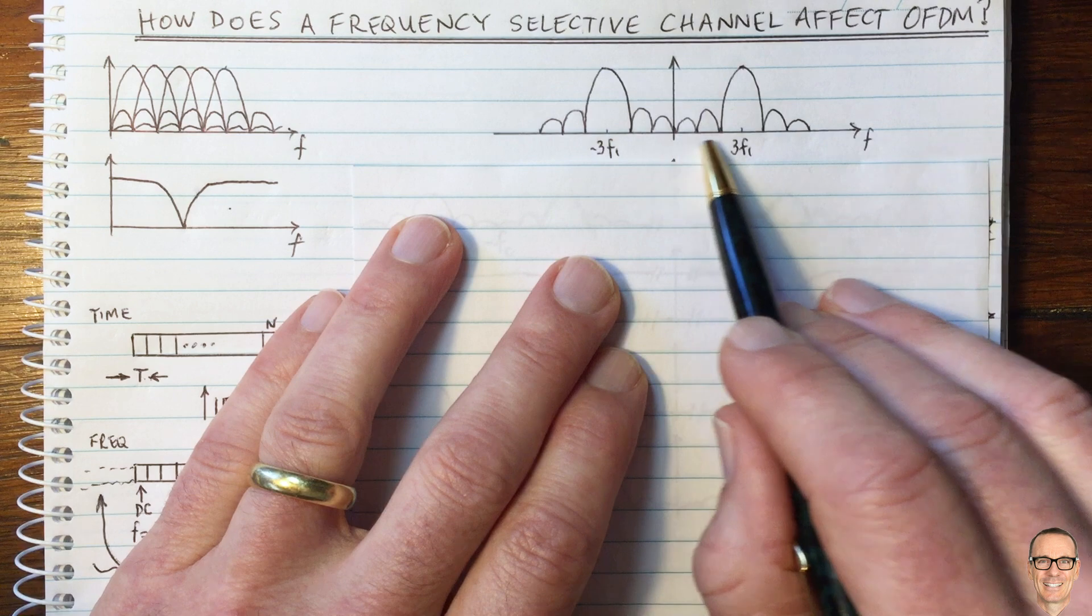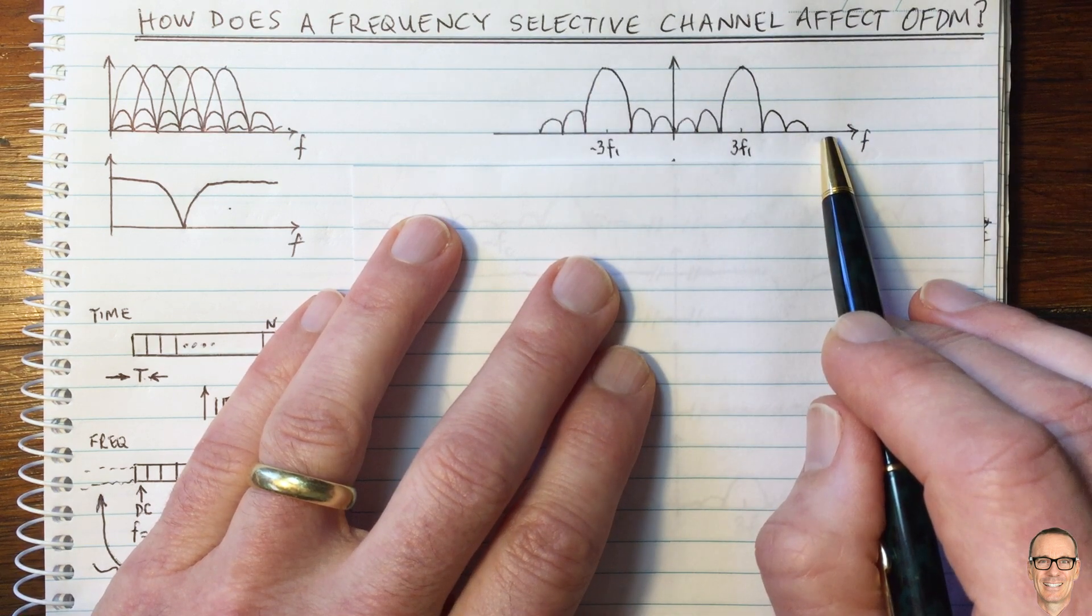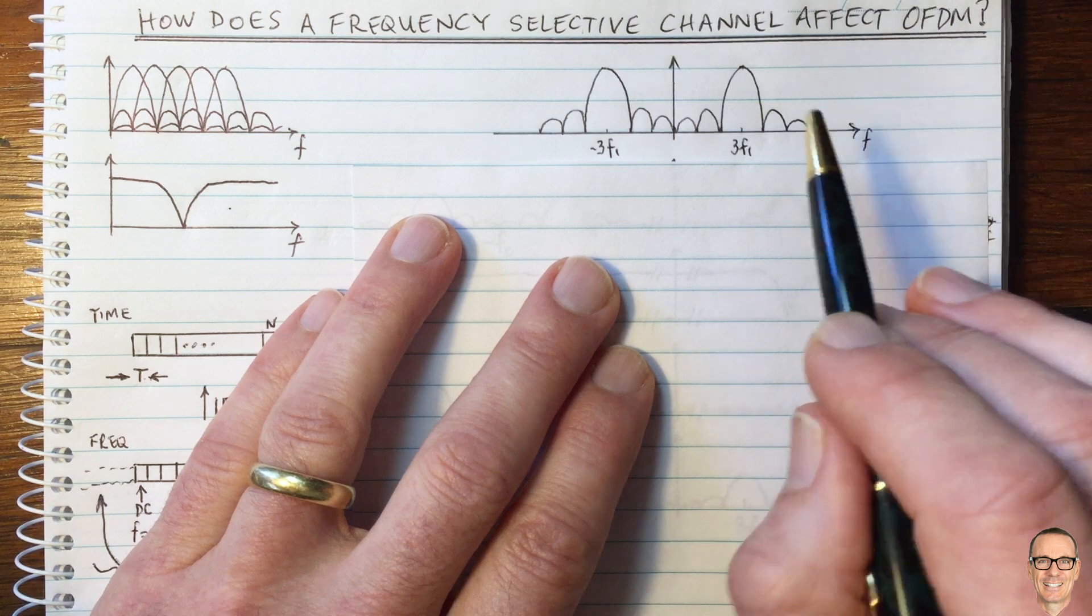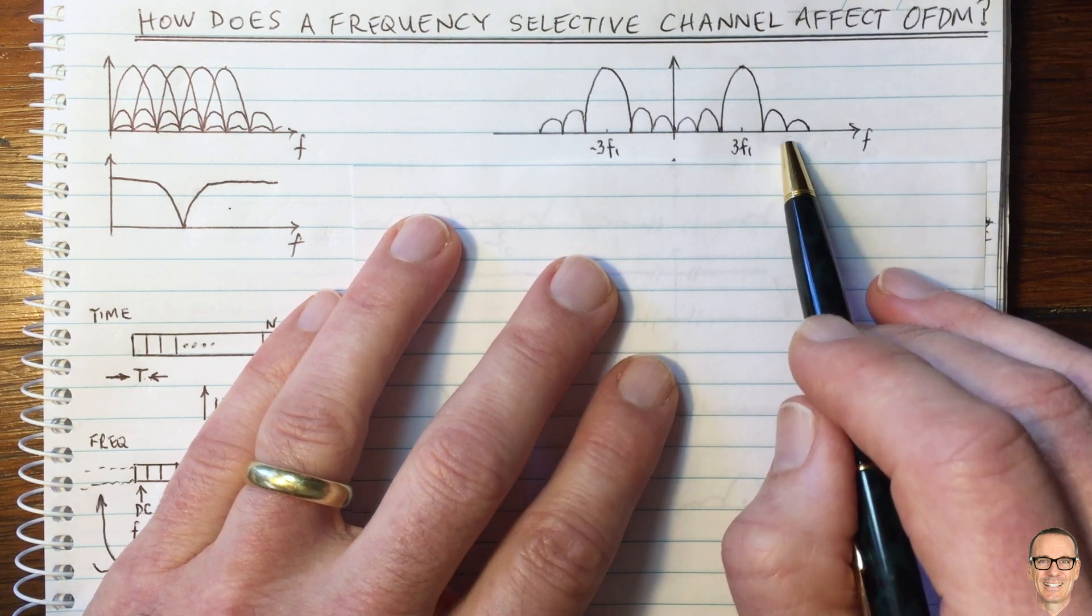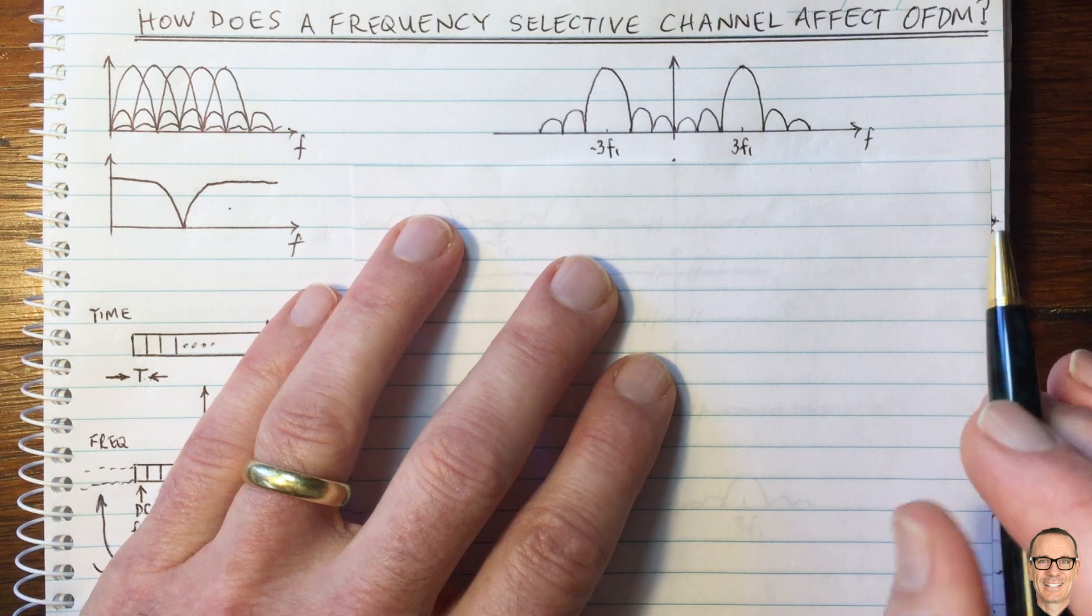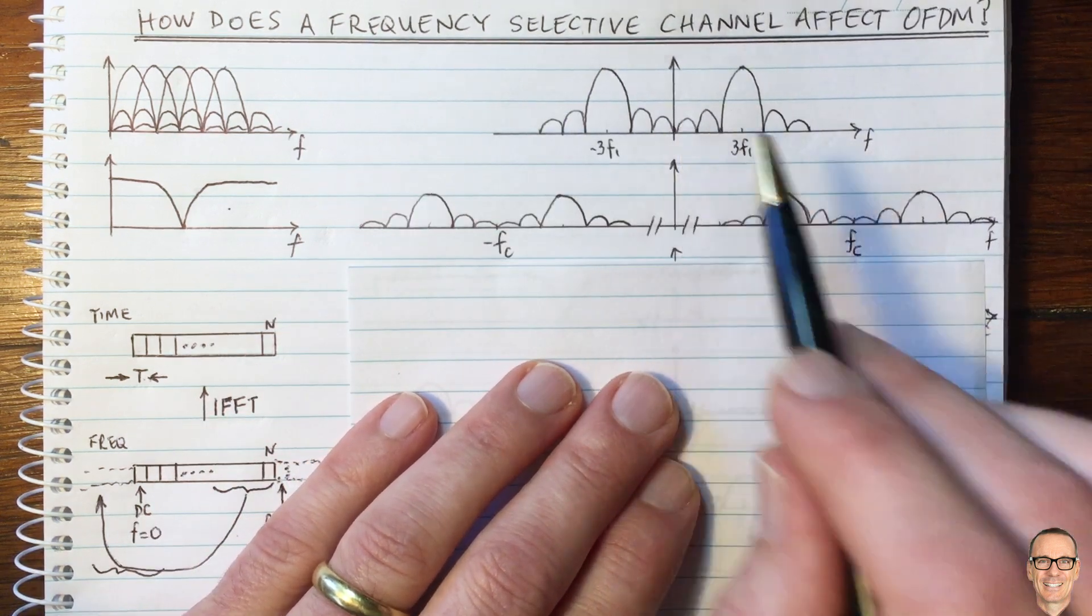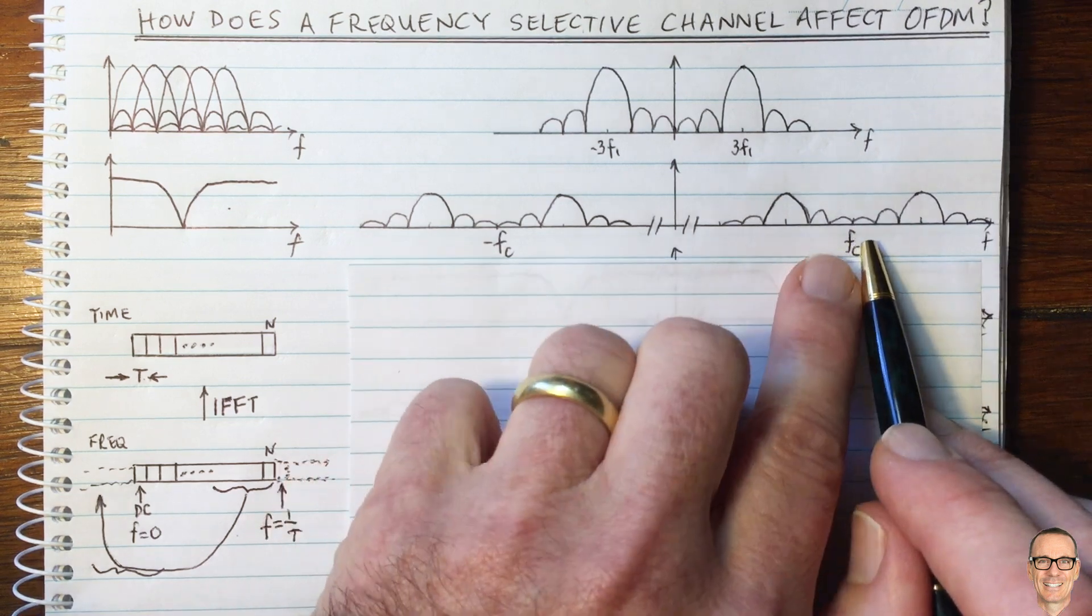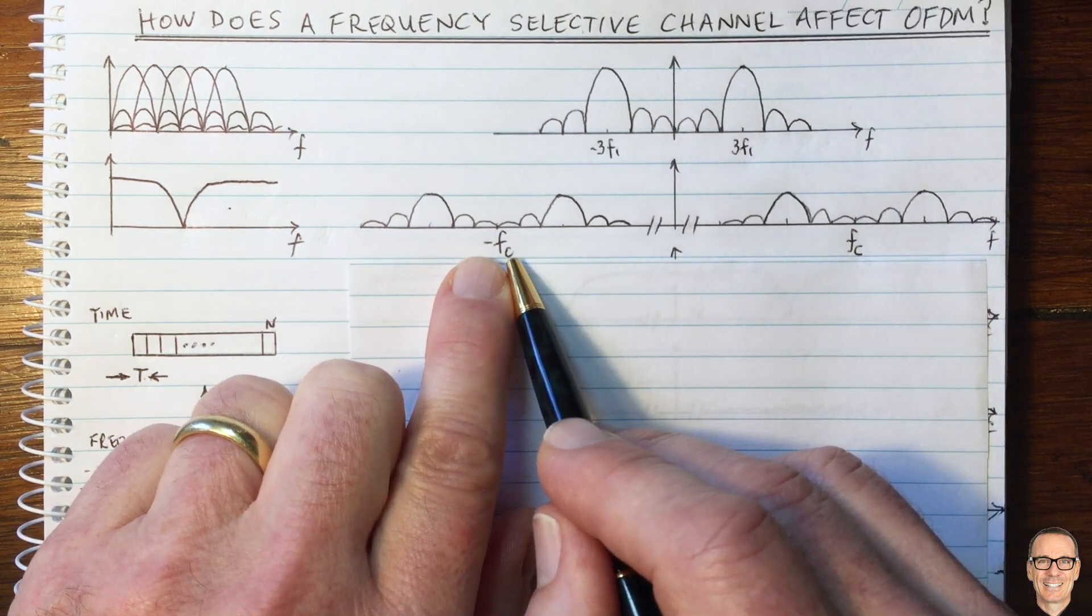As we said, the real component is transmitted by modulating with a cos waveform. That means multiplication in the time domain, which means convolution in the frequency domain with delta functions at the carrier frequency.